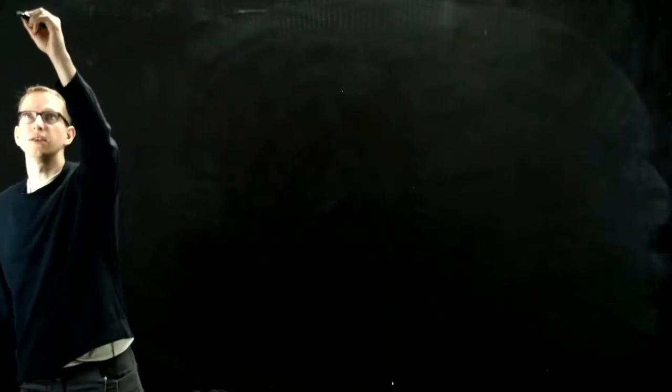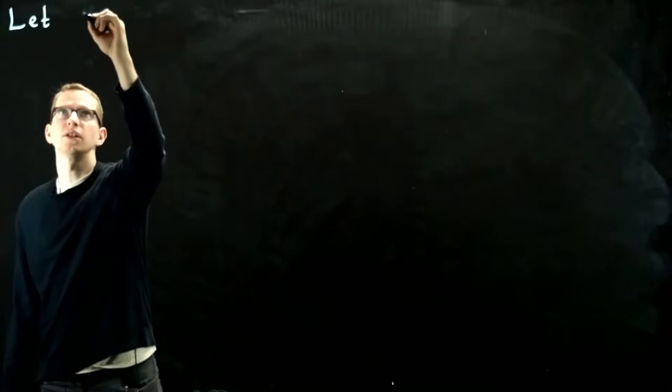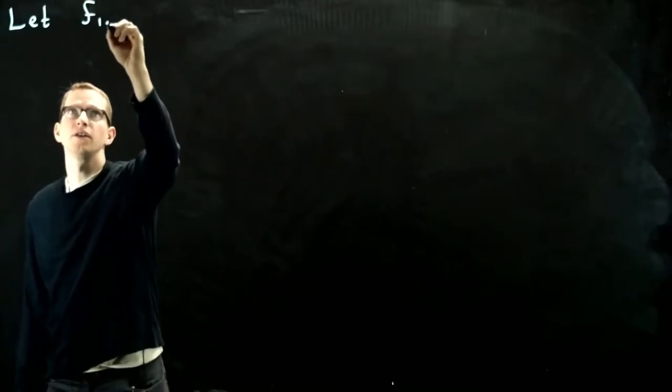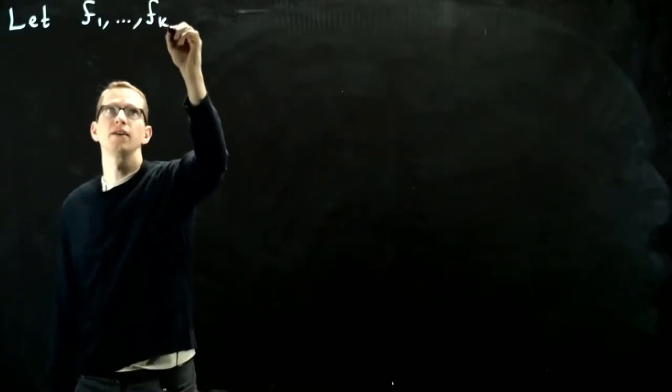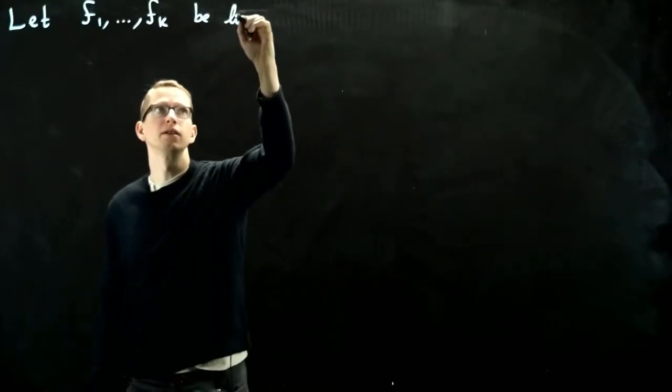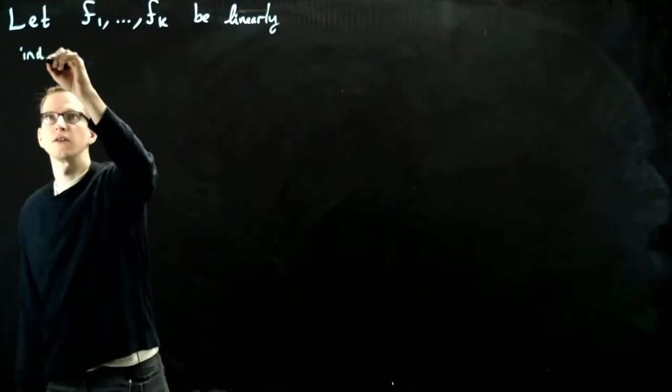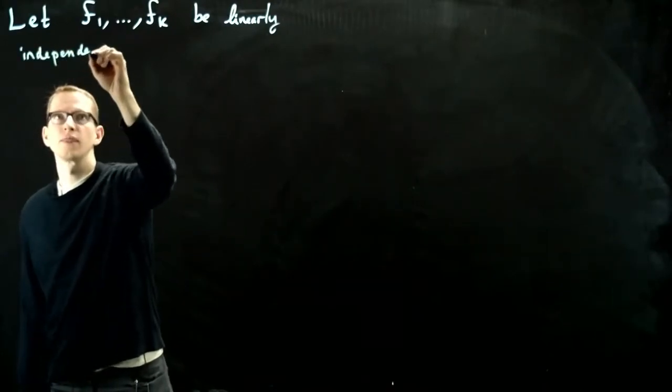The way that we're going to do this is we're going to set up some notation and we're going to let F1 through Fk be linearly independent functions.